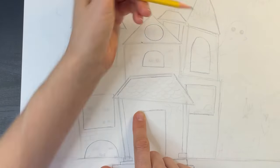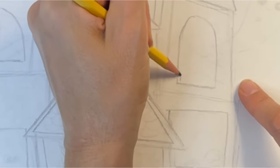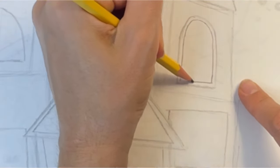I'm going to add a double line around the inside of my center roof and also around this window. Adding double lines is a fun way to make your drawing look more detailed.